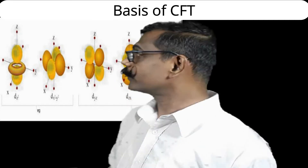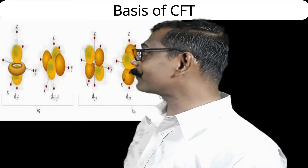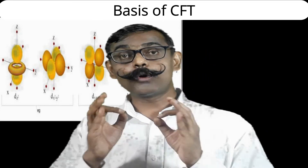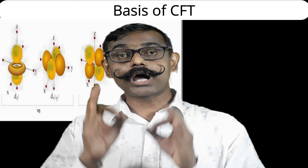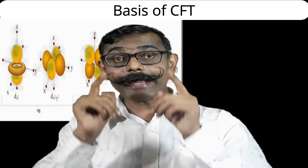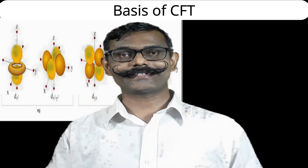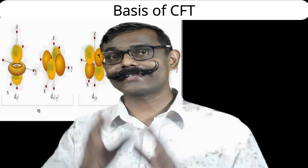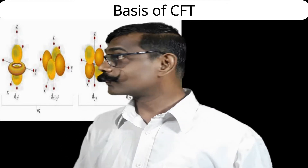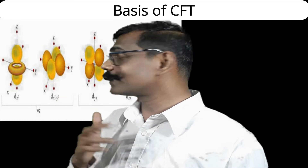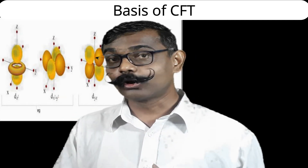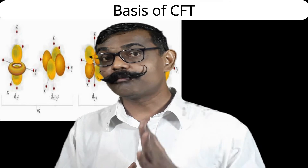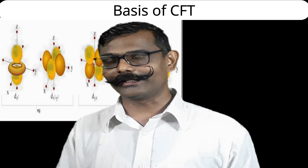The second orbital, dx²-y², has lobes perfectly along the x and y-axes. Two opposite lobes are represented in yellow color and the other two opposite lobes in brown color.